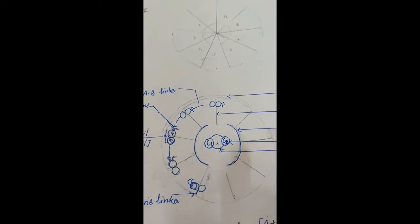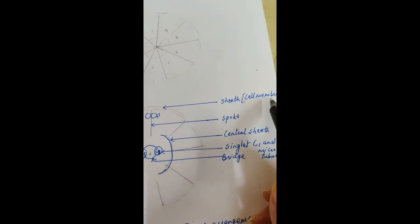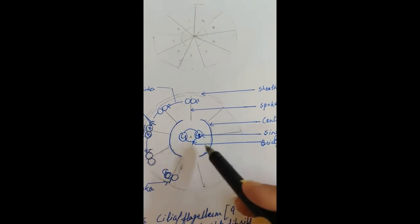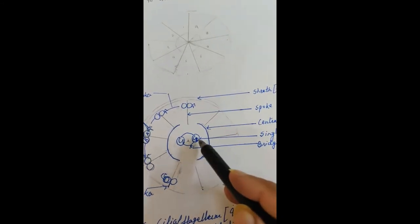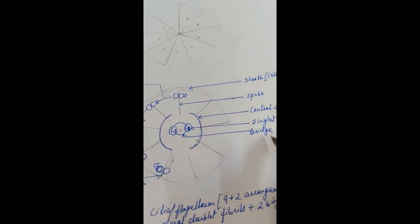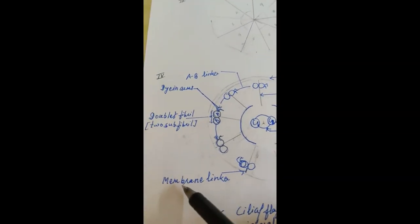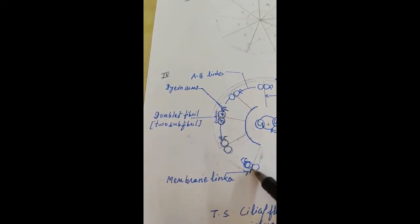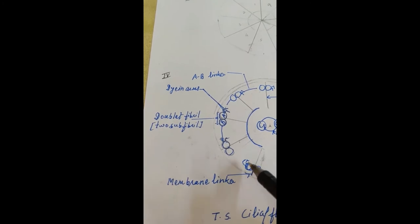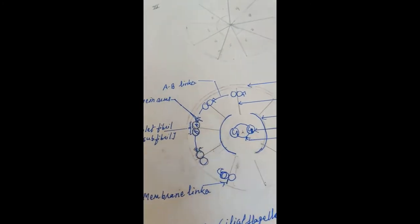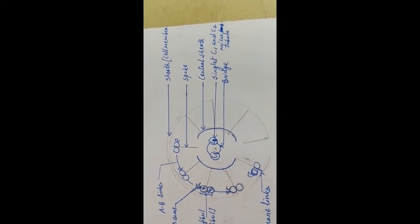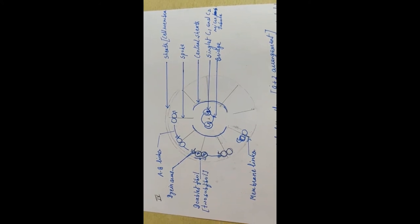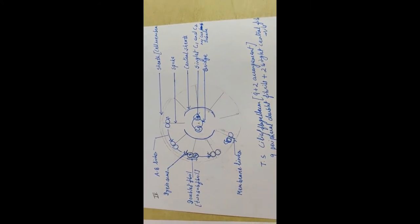And this is how you are going to complete, and then just the labeling. Sheath, which is actually the cell membrane. The spokes, which are proteinaceous. Central sheath, which is encircling the two singlets, C1 and C2, and the bridges between them. These are the membrane linkers. You need to link the cell membrane with these doublets, otherwise they will slip. And these are of course doublets. And that is how the structure, 9 plus 2 arrangement of the exoneme of cilium and flagellum, are complete.